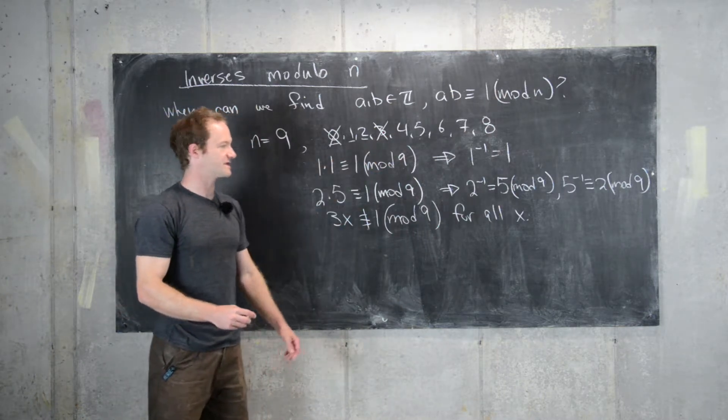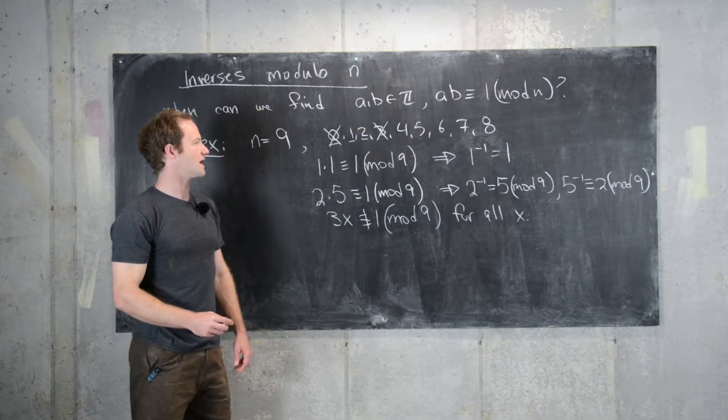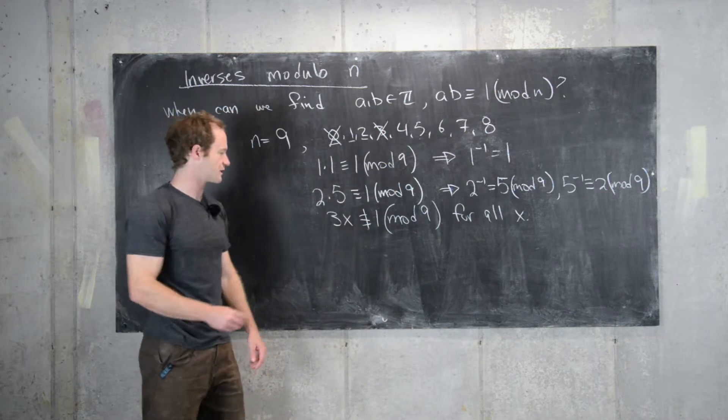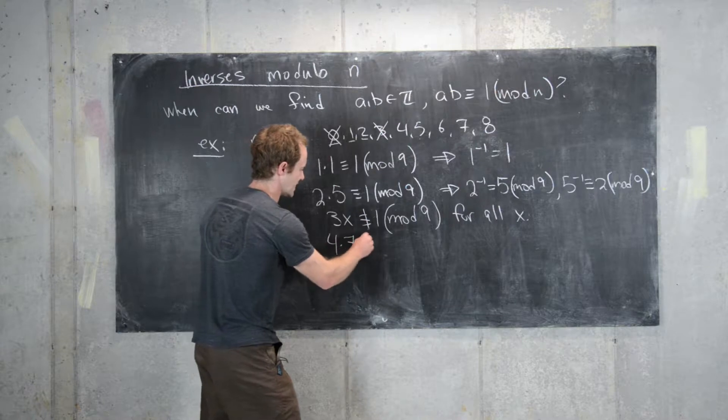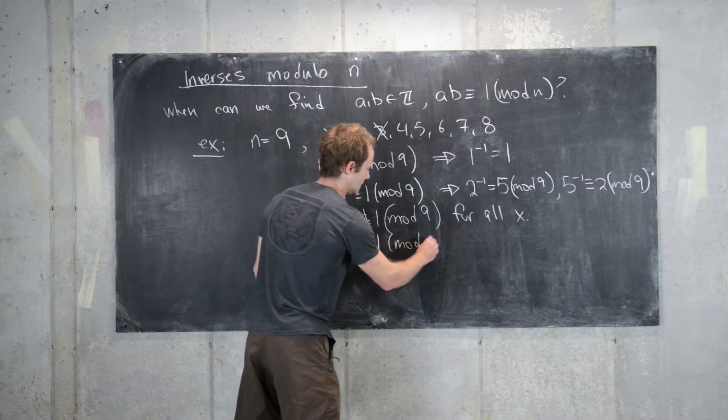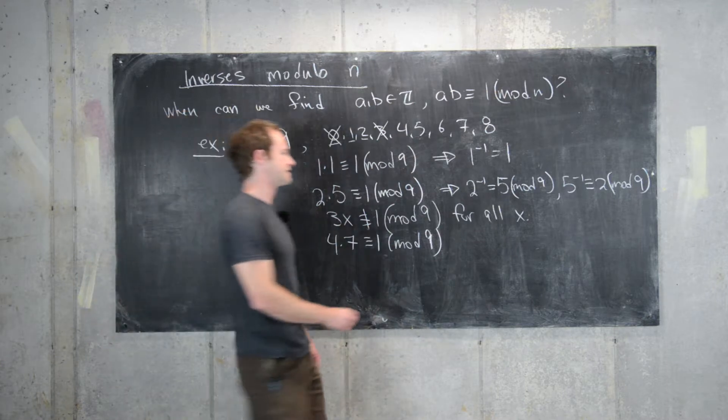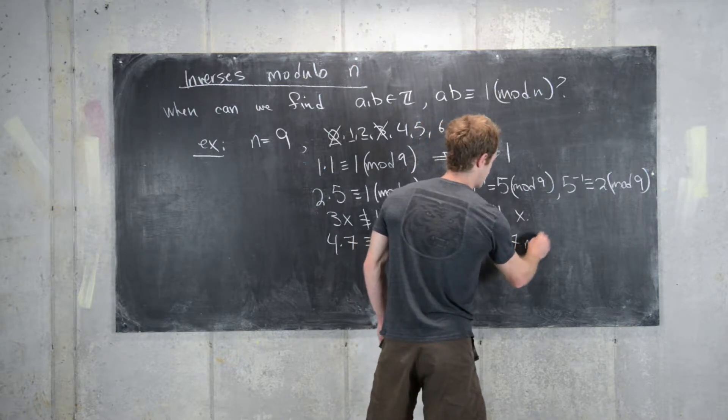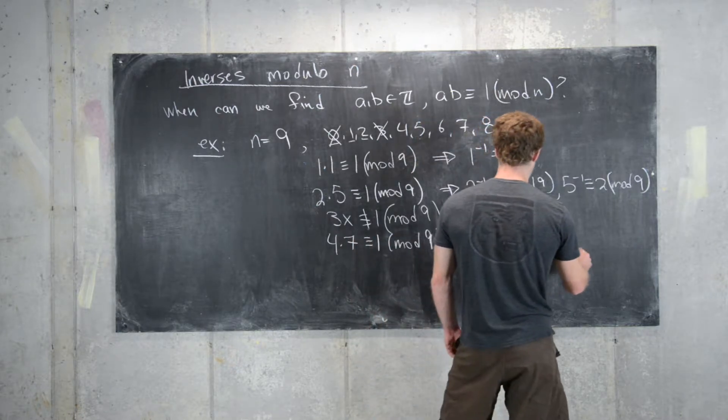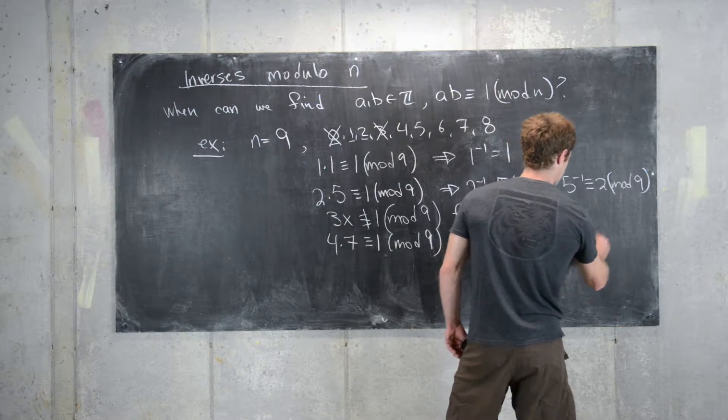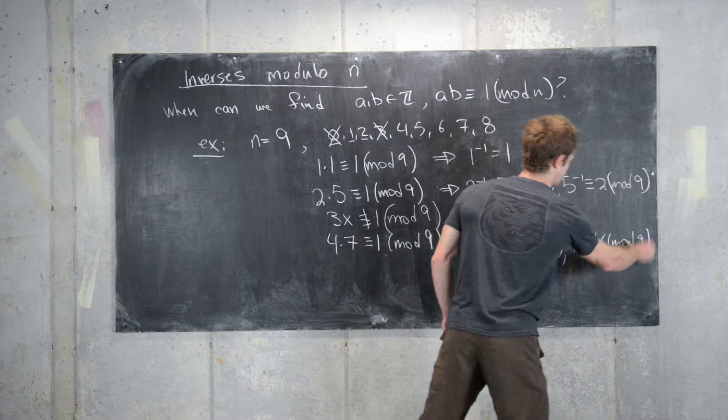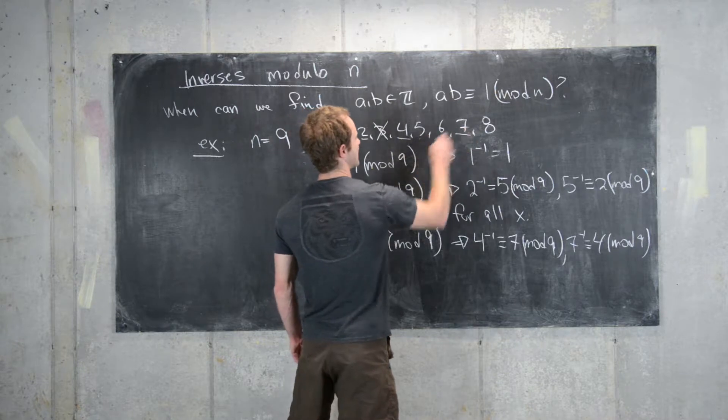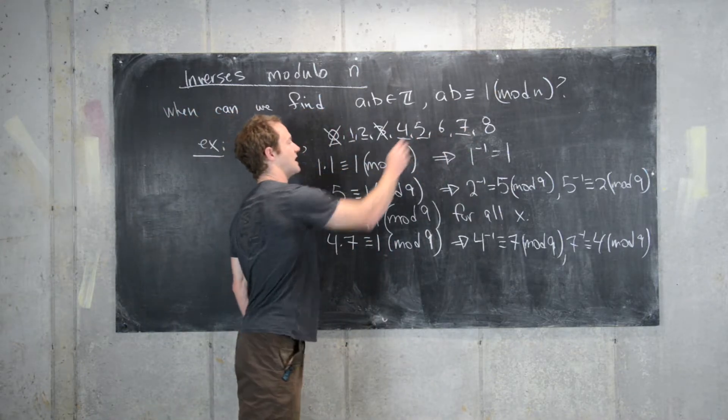So let's look at 4. And so 4 times 4 is 16, that's not 1 mod n. But maybe let's look at 4 times 7 is 28. And 28 is 1 more than 27. So here we have 4 times 7 is congruent to 1 mod 9. And so that's equivalent to saying that 4 inverse is 7 mod 9. And likewise, 7 inverse is 4 mod 9. So all at once we've taken care of 4 and we've taken care of 7. We've also taken care of 5 from before.